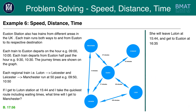She will leave Luton at 1544 and get to Euston at 1635. This is because if she gets there at 1544, she can only get a train to Euston at 16.00, and she will arrive at Euston at 1635.